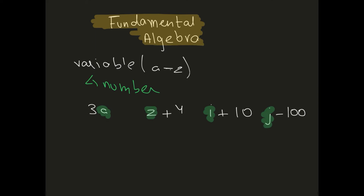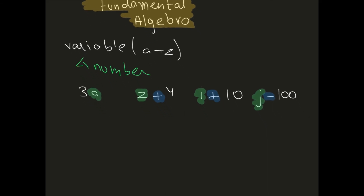In algebra, the plus, minus, multiply, and divide signs are all called operations — algebraic operations. So for example, 5 divided by z, or 4 multiplied by k — the plus, minus, divide, and multiply signs are the operations, while z and k are the variables.